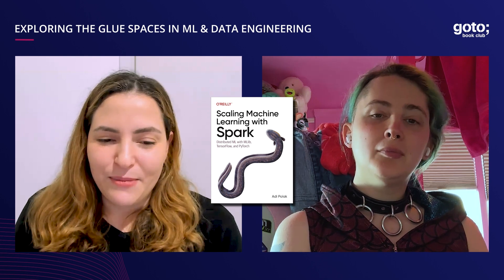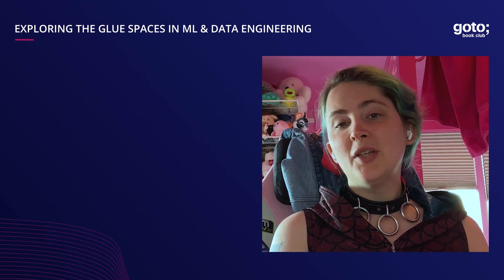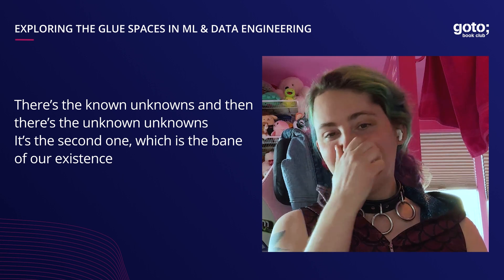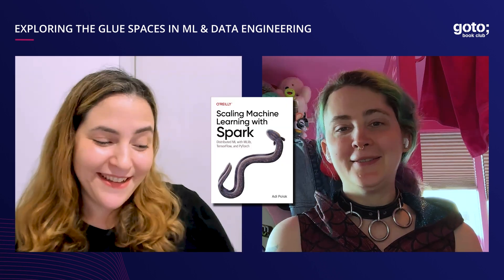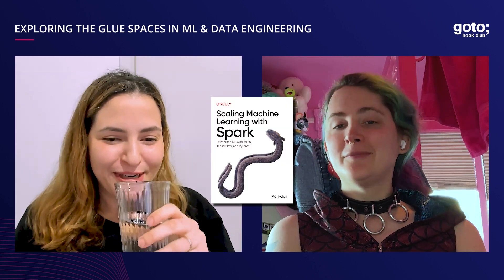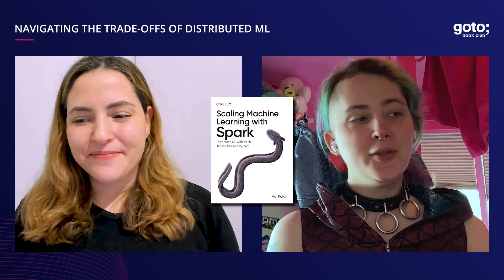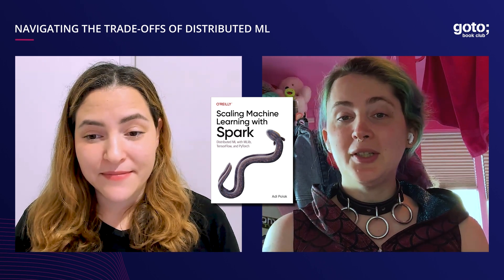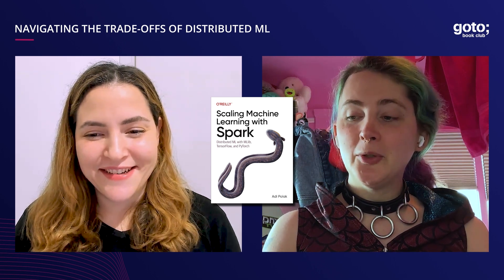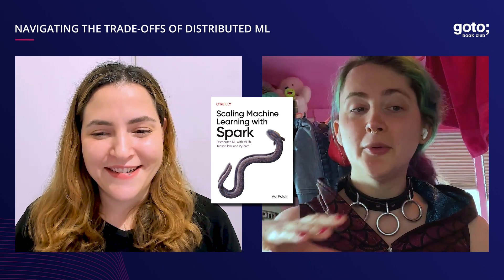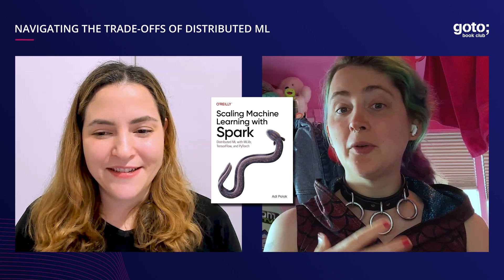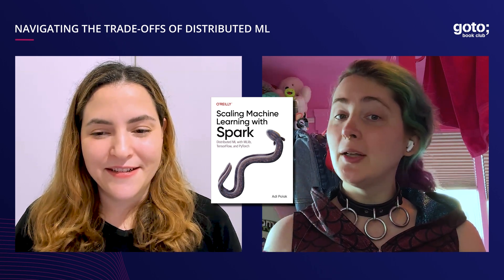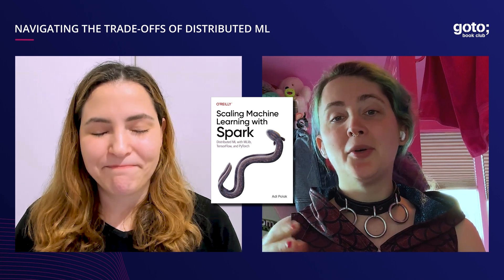There are the known unknowns and then there's the unknown unknowns — that second one is the bane of our existence. One of the other things I really liked about the book was how you took the optimization algorithms — which machine learning and data scientist folks are already familiar with — but then explained: now that we're in a distributed model, the trade-offs are different here. How did you decide to do that?